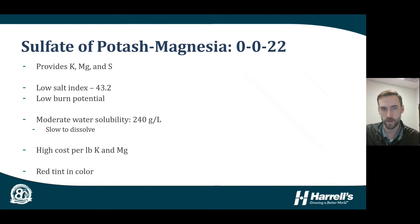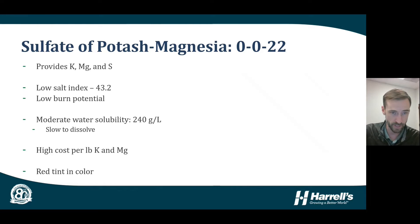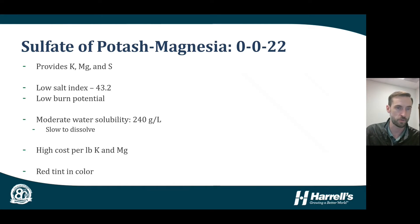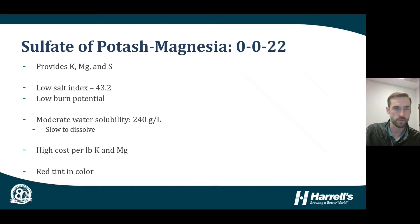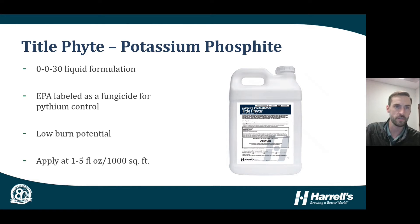Compared to SOP and MOP, the 0-0-22 K-Mag has a high cost per pound of potassium and magnesium. If you're targeting a specific applied potassium rate in pounds per thousand square feet, SOP and MOP are more affordable. However, when you need both potassium and magnesium, K-Mag is a good option for inclusion in a blend. As a general rule, if you see this material in a fertilizer blend, it will have a reddish tint from iron impurities in the raw materials.